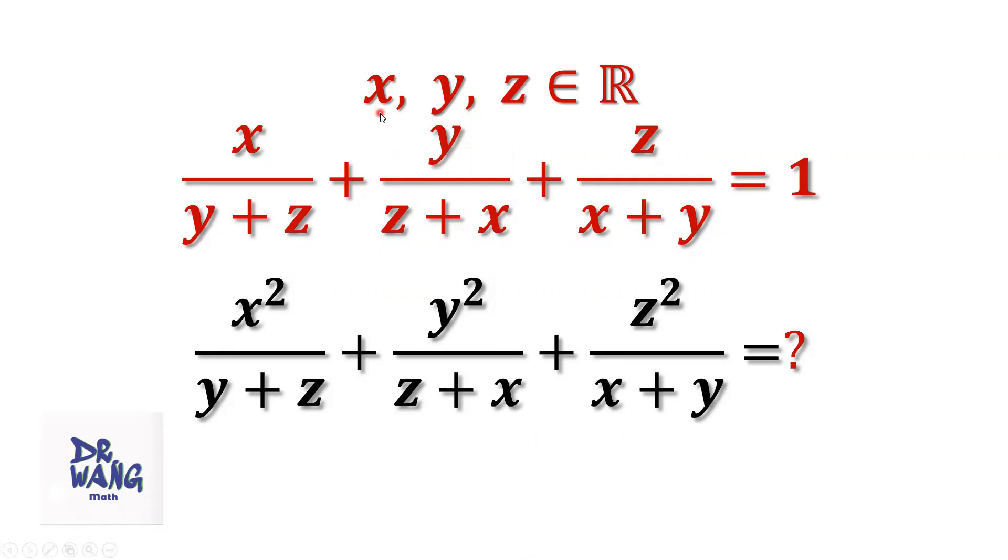If x, y, and z are real numbers, x over y plus z plus y over z plus x plus z over x plus y equals 1, what is the value of x squared over y plus z plus y squared over z plus x plus z squared over x plus y?